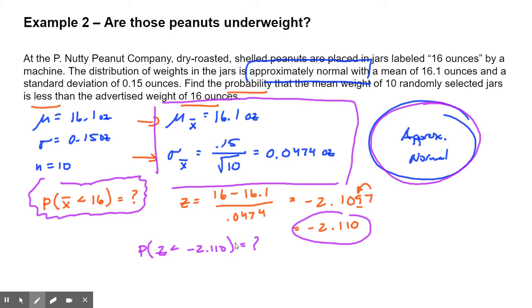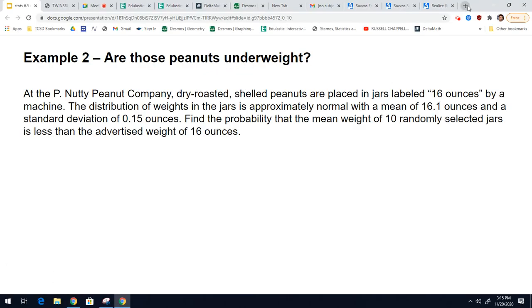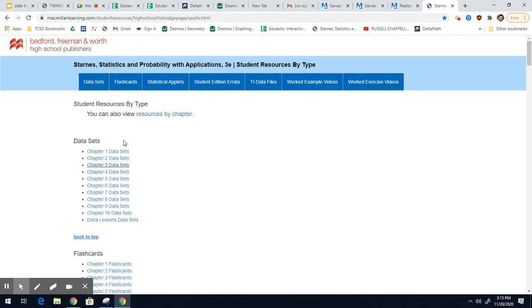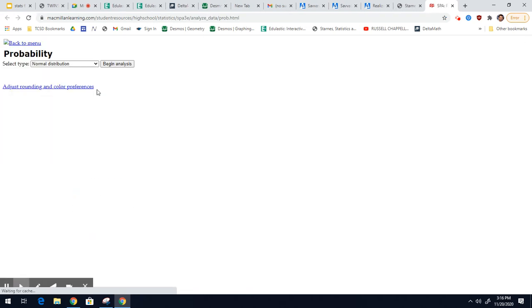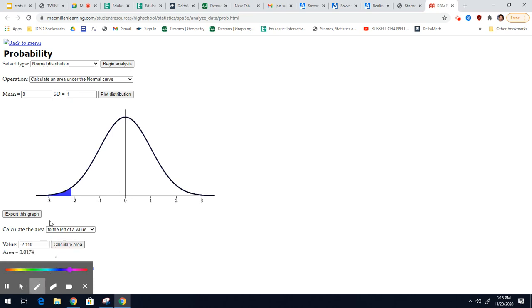Stats applets, probability. This is a normal distribution. We're calculating an area because we want to find a probability. Our mean is zero, our standard deviation is one, and we're less than, so that's to the left of negative 2.110. There's our answer. The probability that Z is less than negative 2.110 is 0.0174. That's your probability.